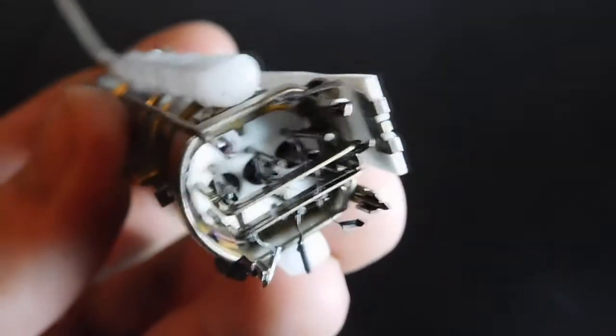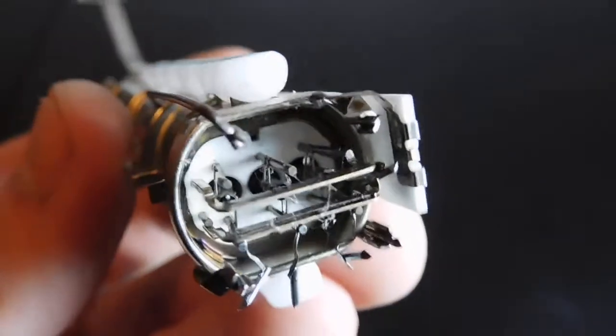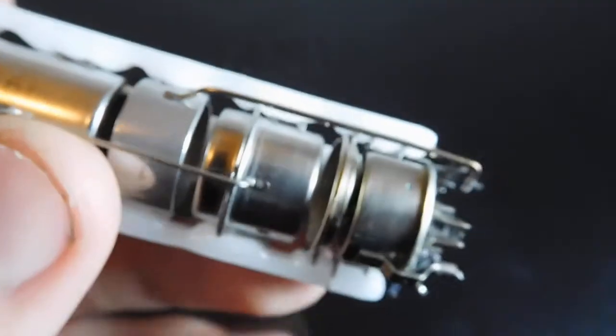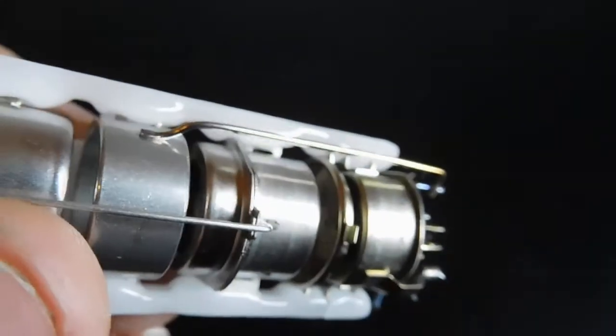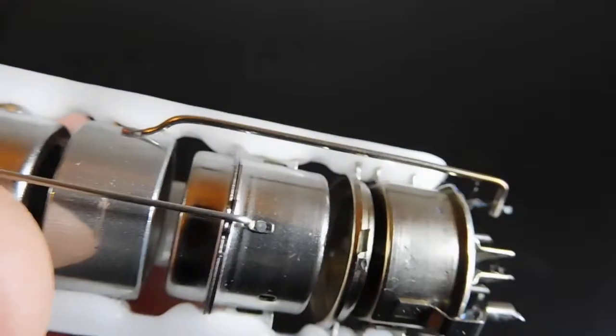You've got some kind of ceramic insulator to hold the whole lot apart. And you've got a grid right there. That's got three little holes in it as well I believe.